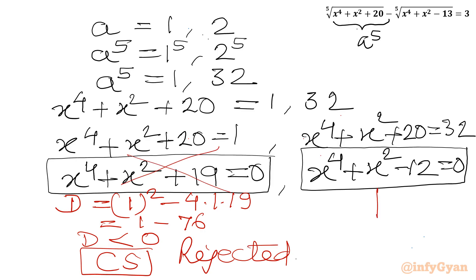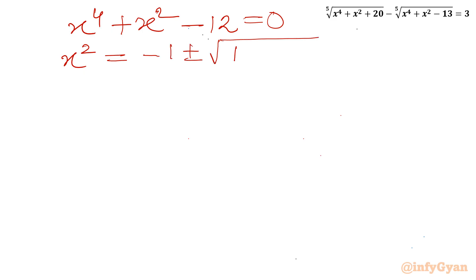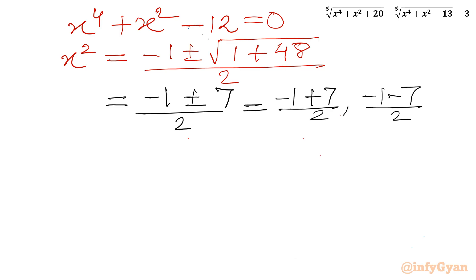Now for the second quadratic equation in x²: x⁴ + x² − 12 = 0. Applying the quadratic formula: x² = (−1 ± √(1 + 48)) / 2 = (−1 ± √49) / 2 = (−1 ± 7) / 2. So x² = 6/2 = 3, or x² = −8/2 = −4.